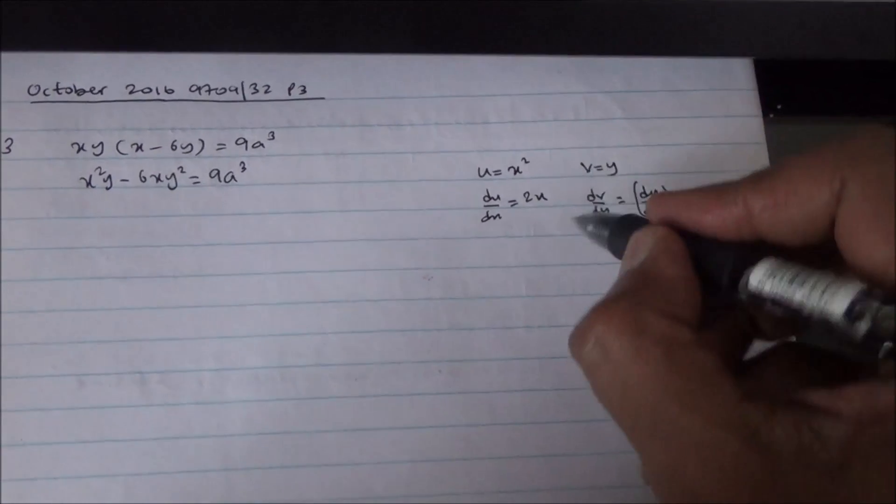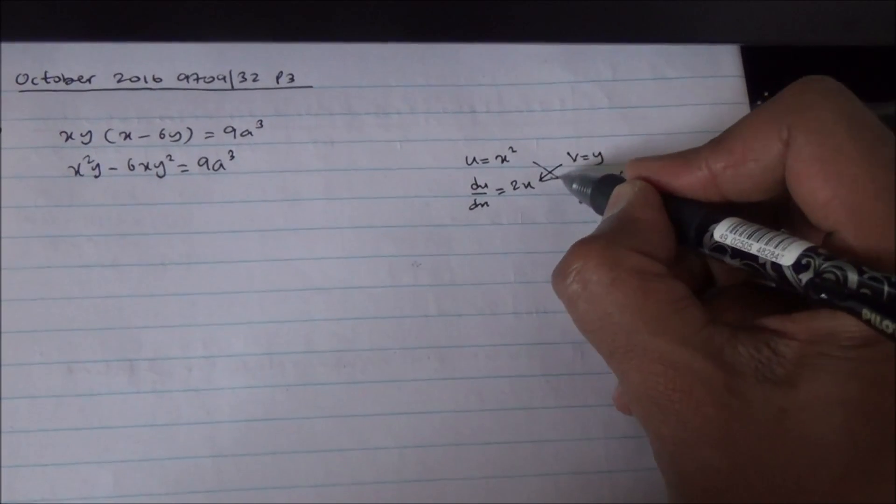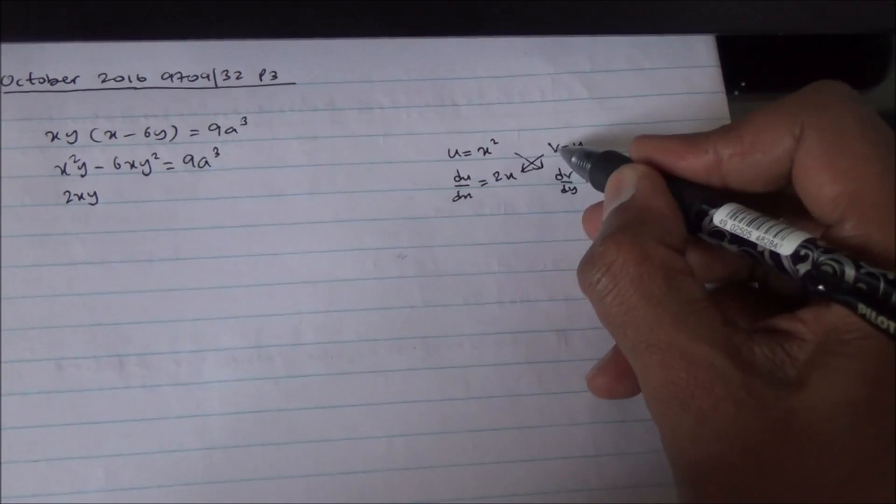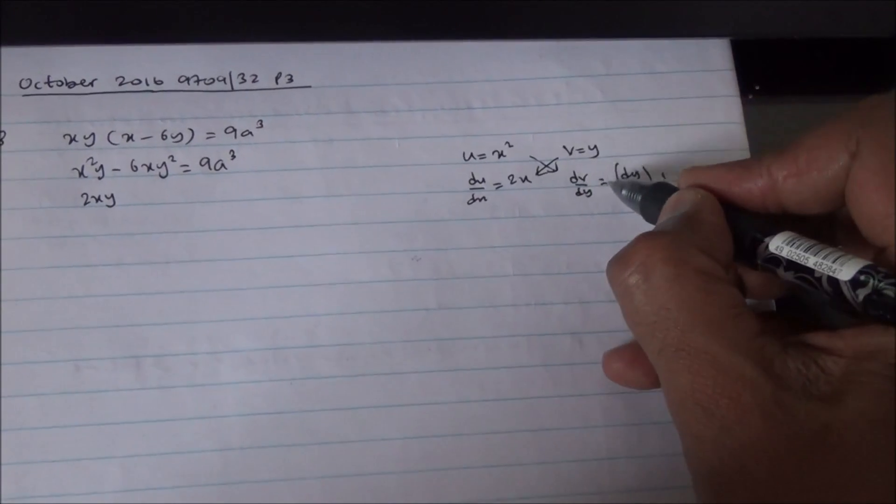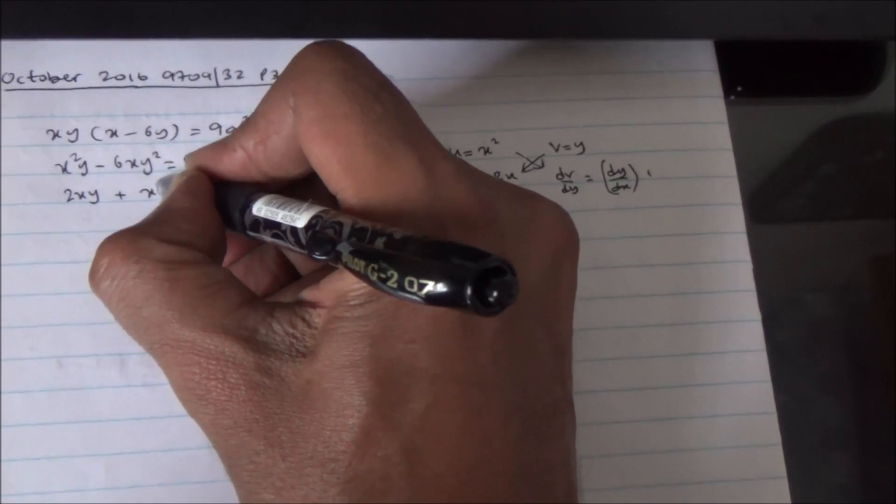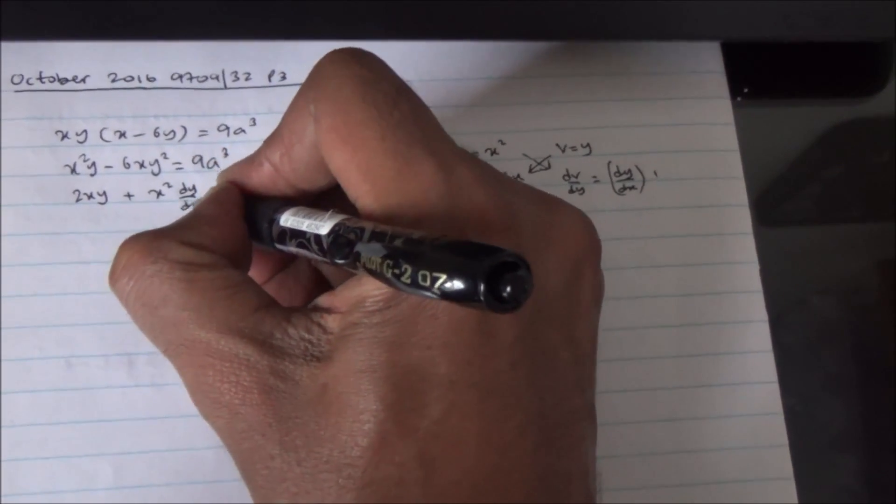So, v du by dx plus u dv by dx, v du by dx is 2xy, this times that, plus u dv by dx, so x squared times dy by dx. So, plus x squared dy by dx.